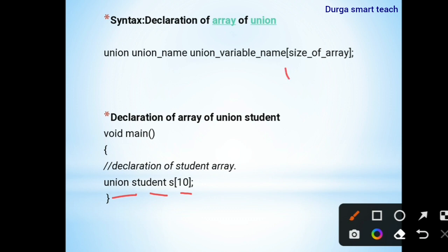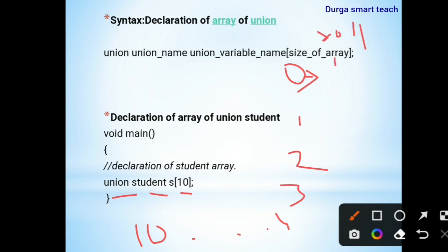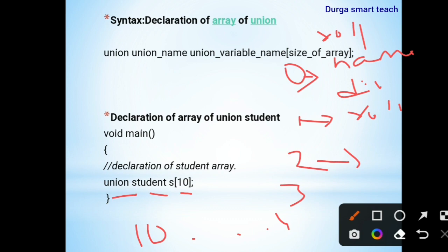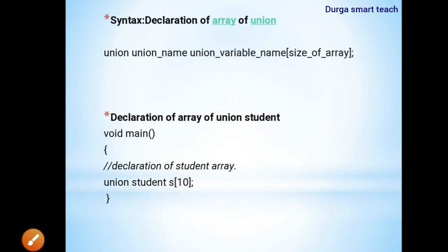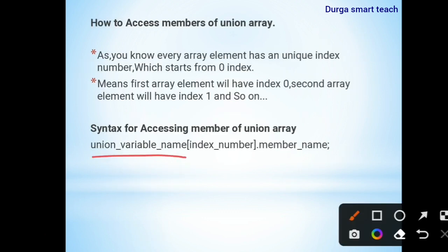The syntax for accessing a member of a union array is: union variable name, index number, dot, member name. For example, with union student 's' of size 10, the ten student details are stored at indices 0 through 9. Each array element — s[0], s[1], etc. — holds roleNumber, name, and division. If you want to access any one of them, you use the syntax: union variable name, s[index].memberName.